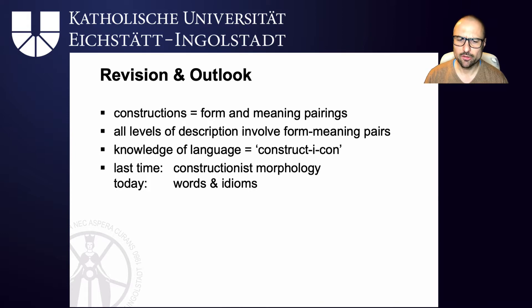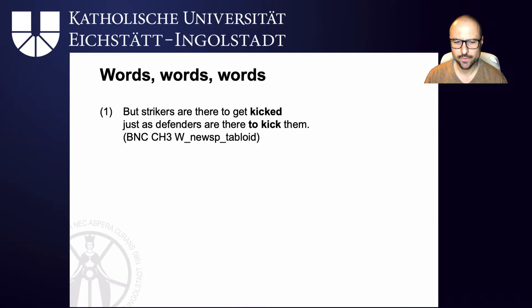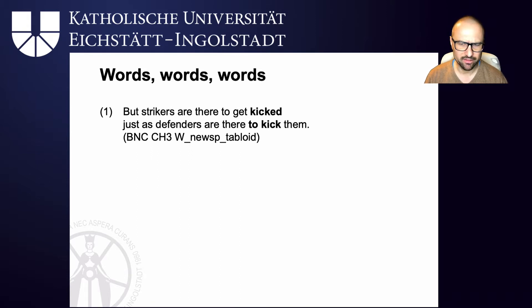In the last couple of sessions we looked at constructionist morphology. Today we take a closer look at what word constructions look like, as well as how we can analyse idioms in construction grammar. Take the following example sentence: 'But strikers are there to get kicked just as defenders are there to kick them.' We can see that there are two words — 'kicked' and 'to kick' — but we have the strong intuition that these are actually the same word, just different realisations of it.